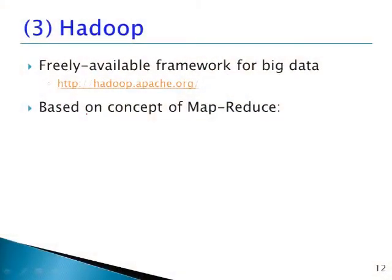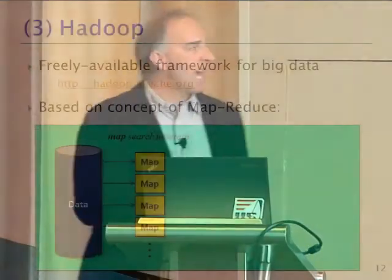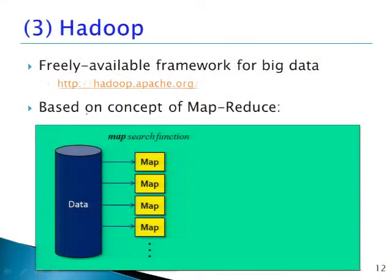Hadoop — freely available framework for big data, hadoop.apache.org. You can install this locally on your machine, put it on your own cluster, or use it in the cloud. It's based on the concept of MapReduce. This is not something new — this concept has been around forever in Lisp and functional programming. The idea is you have some data that you want to apply a function to. It became really popular with search engines like Google and Bing, where the function was a search function. But you're mapping a function across a data set and producing intermediate results.